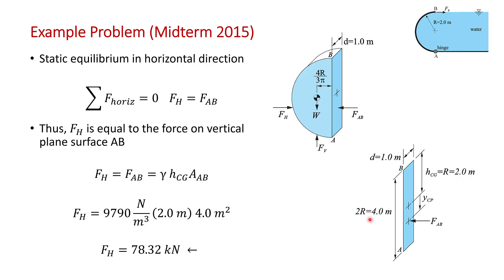The area is four meters by one meter. So we can substitute in here gamma, here's our height of the center of gravity and the area. And we get 78.32 kilonewtons to the left.